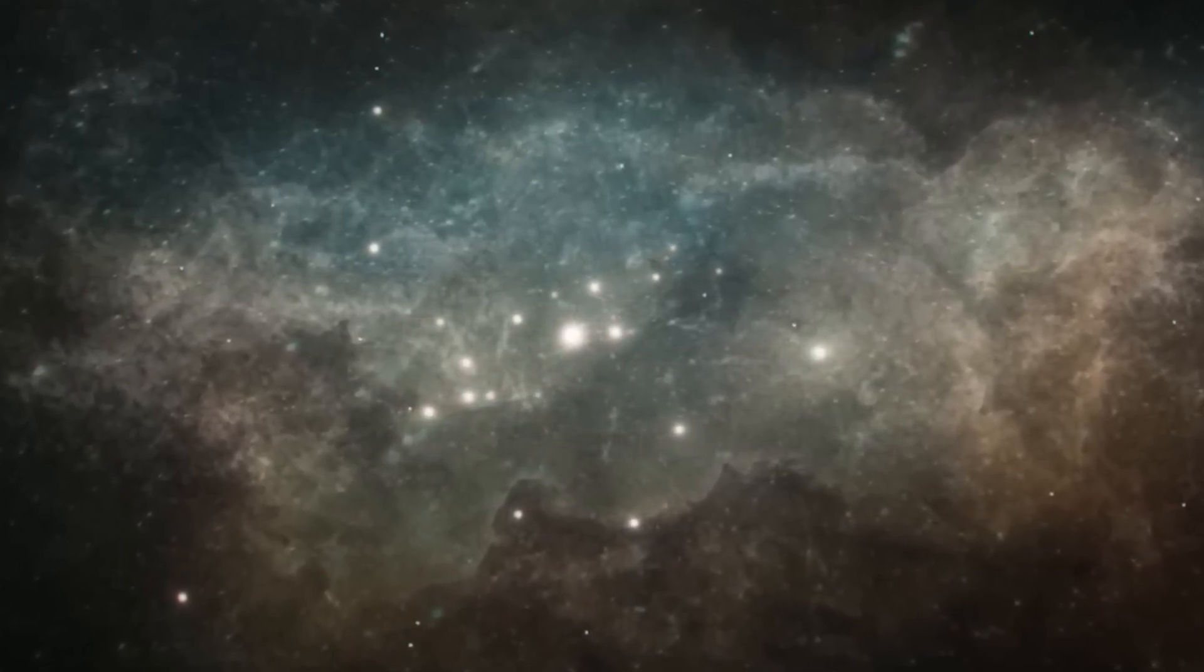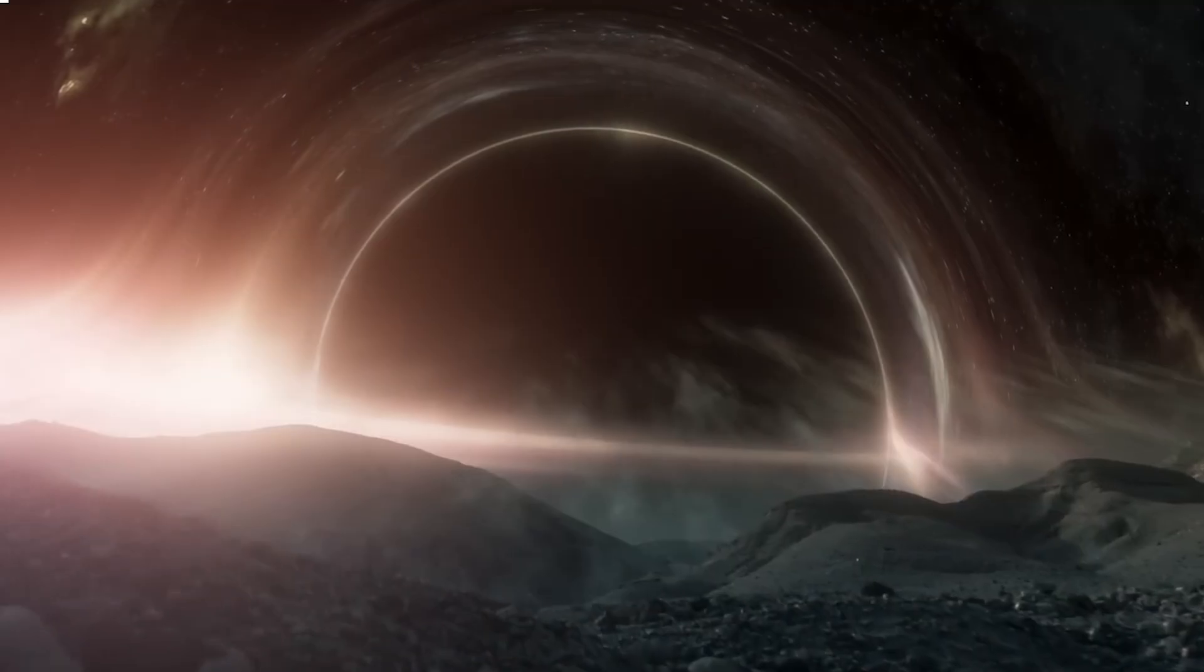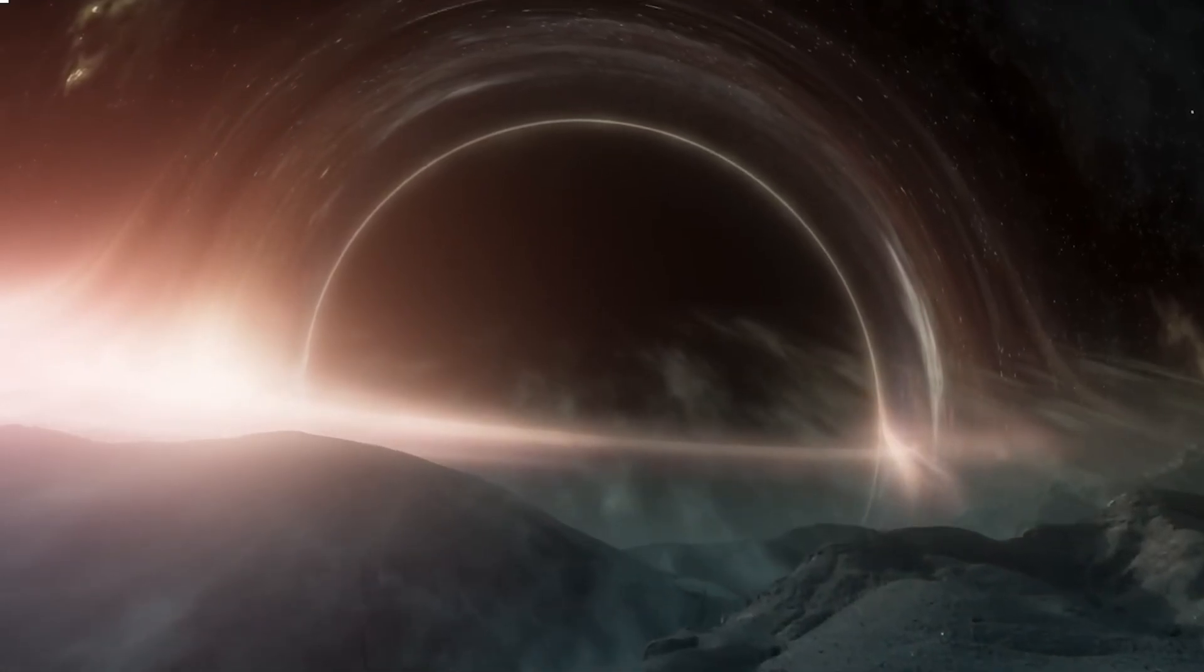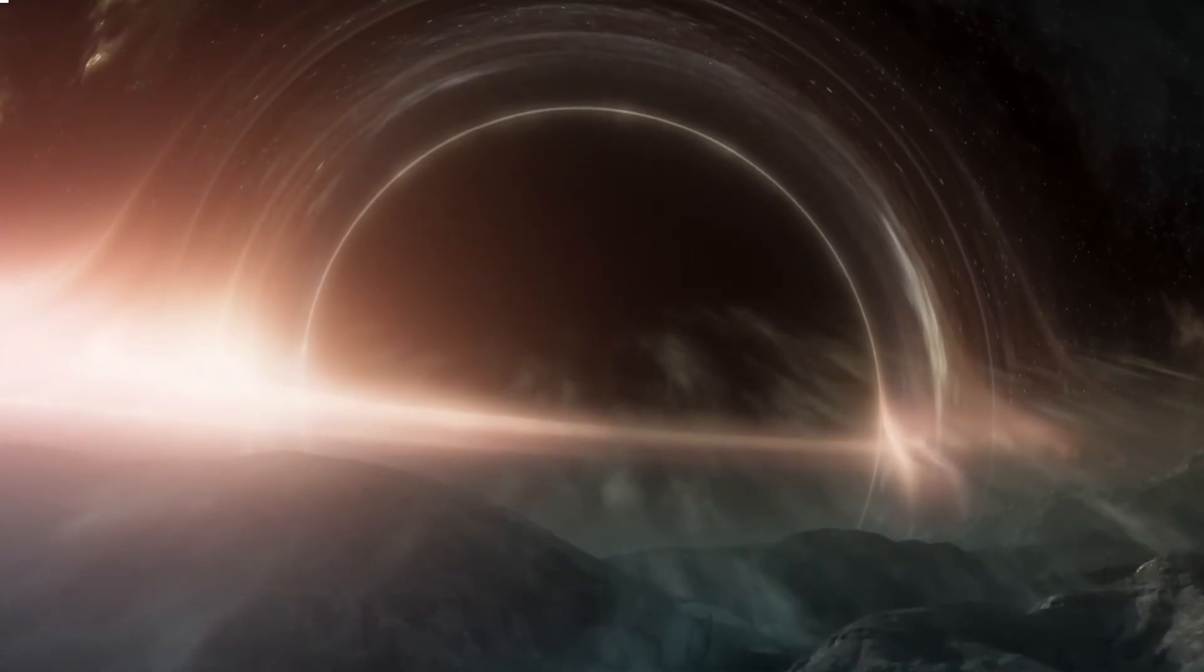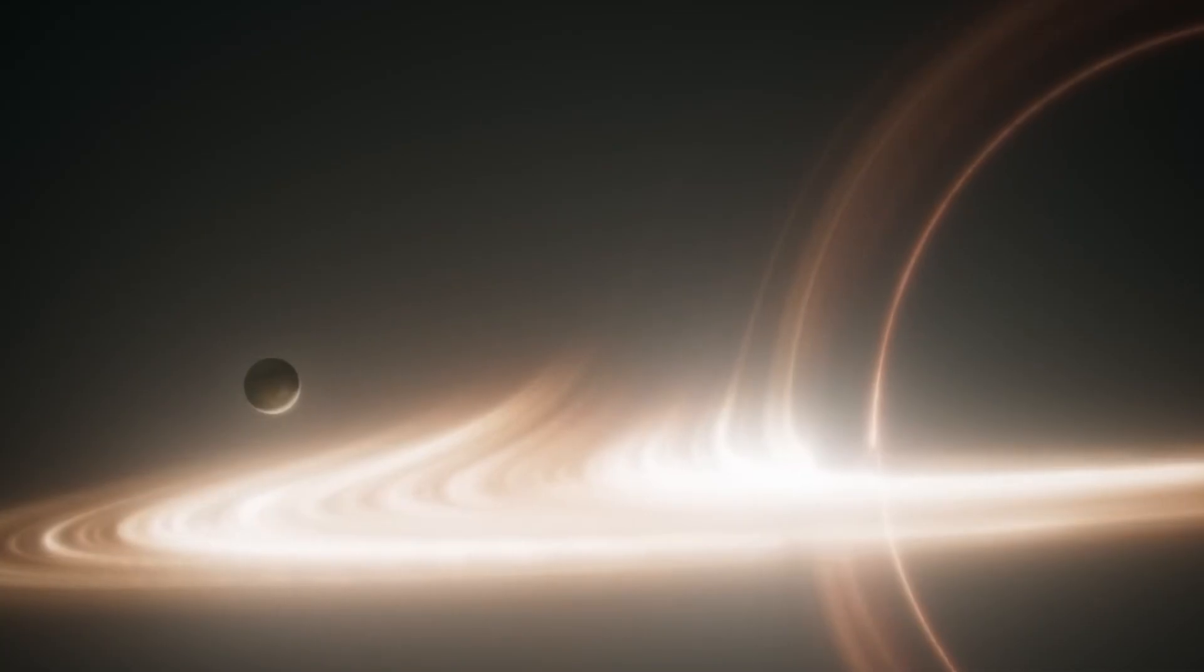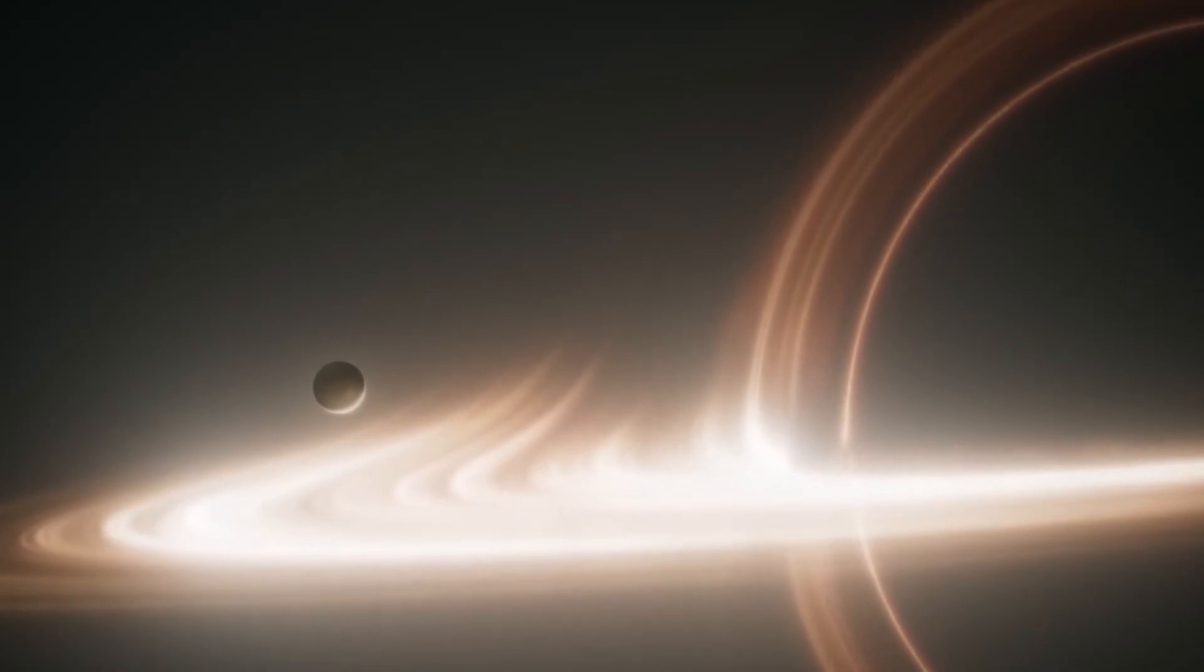So what's really going on here? Inside the Perseus Cluster is a supermassive black hole, millions of times the mass of our sun. As matter swirls into its accretion disk, it generates immense energy and causes ripples in the surrounding hot gas.